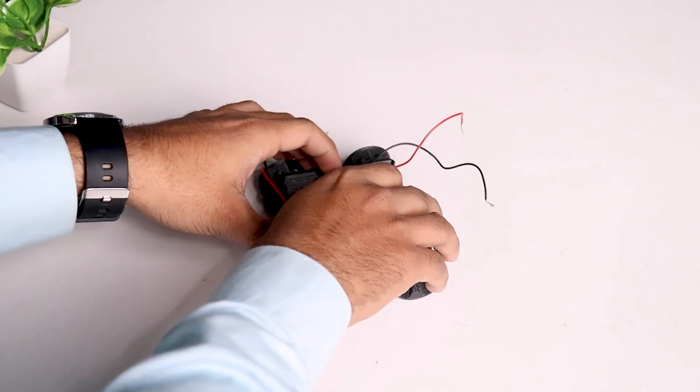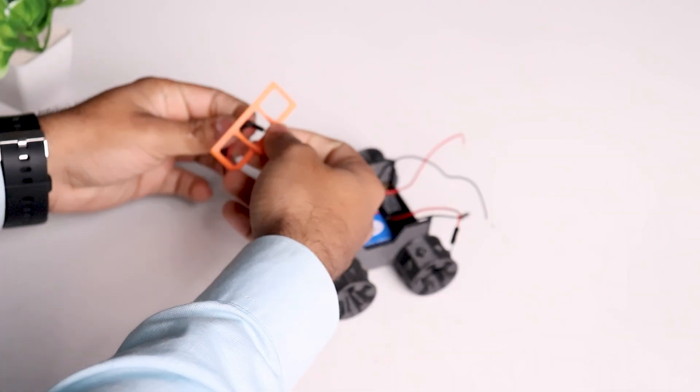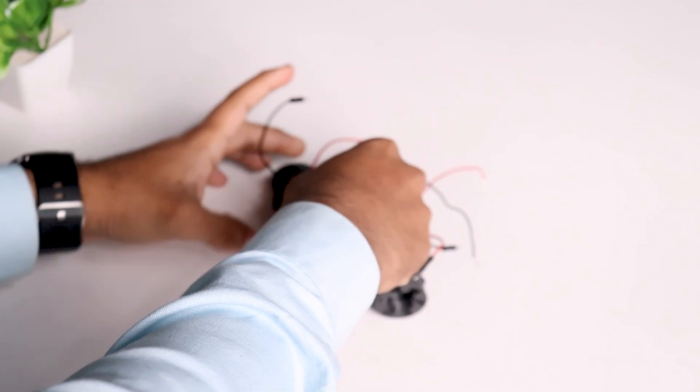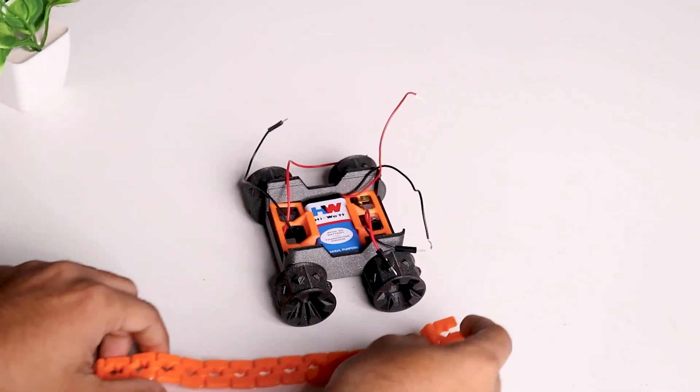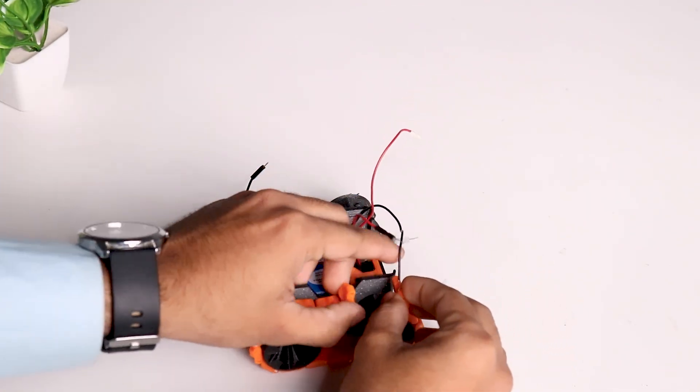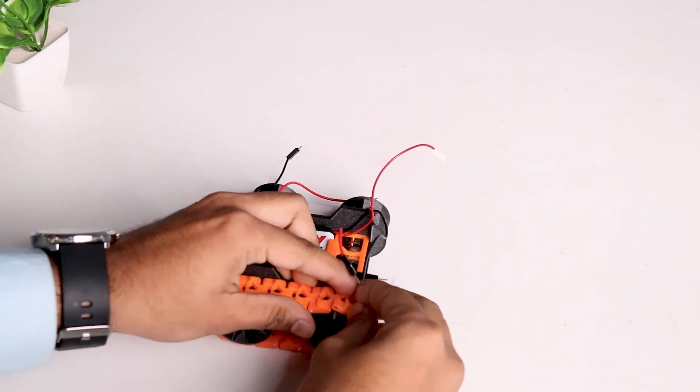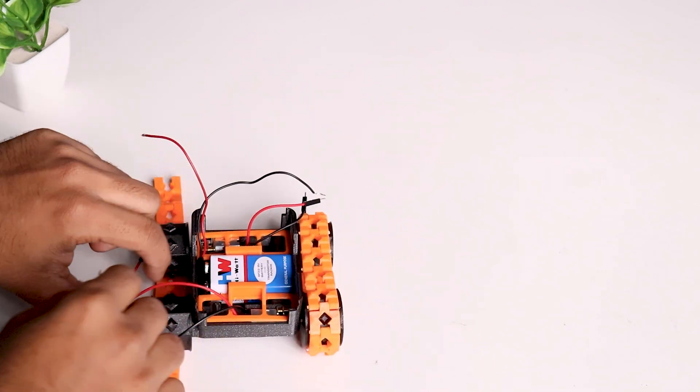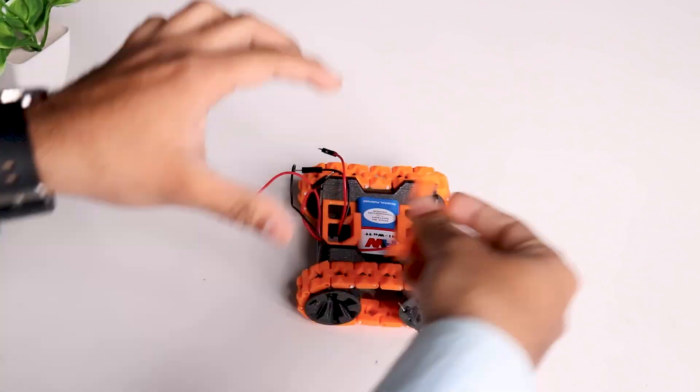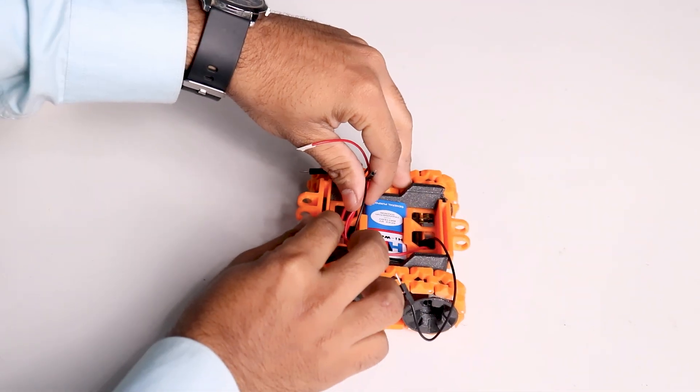Now let's add the battery inside the chassis and fix it with the battery holder. Now let's wrap up the track belt around the wheels.